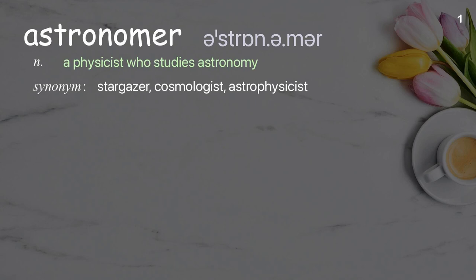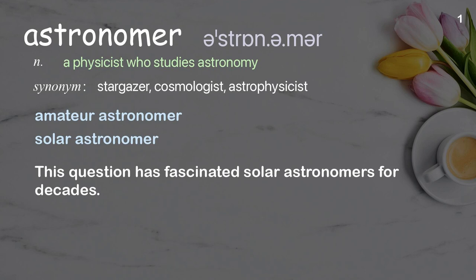Astronomer: A physicist who studies astronomy. Examples: Amateur astronomer, Solar astronomer. This question has fascinated solar astronomers for decades.